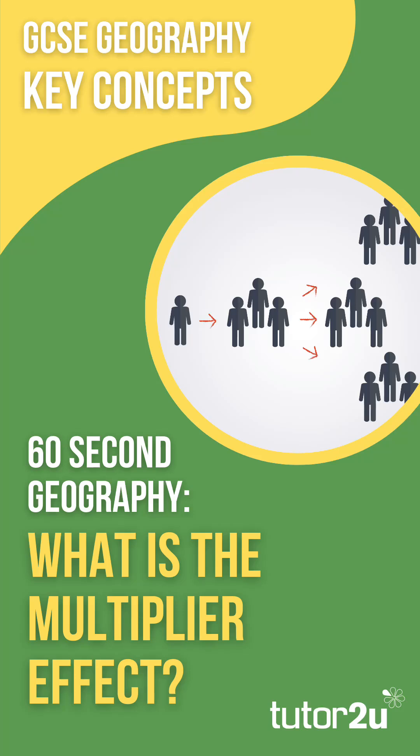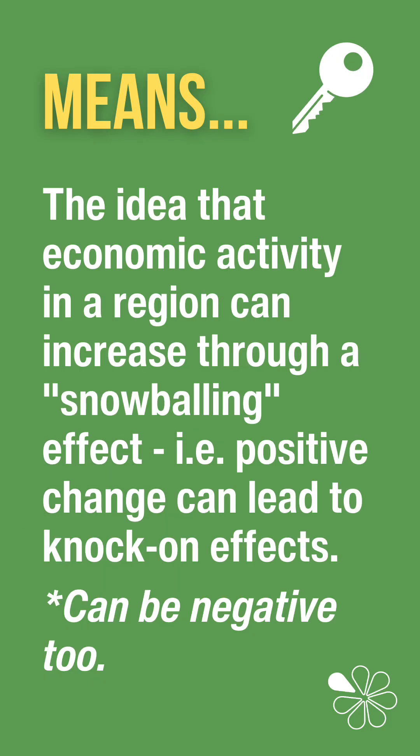Welcome to this 60-second geography short on the multiplier effect, a key concept for GCSE geography. The multiplier effect is the idea that economic activity in a region can increase through a snowballing effect, so a positive change like investment can lead to knock-on effects such as job creation. The multiplier effect can also be negative.